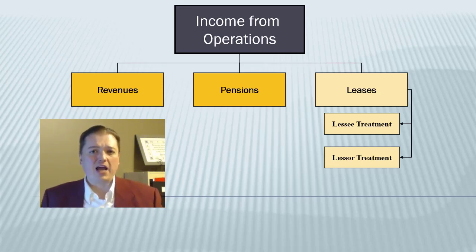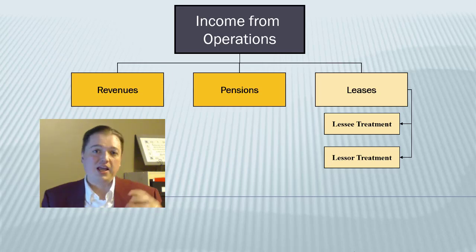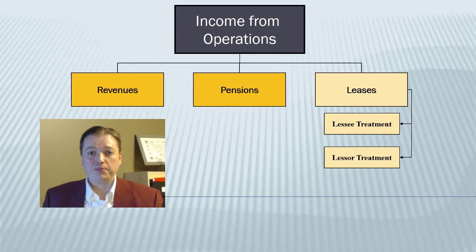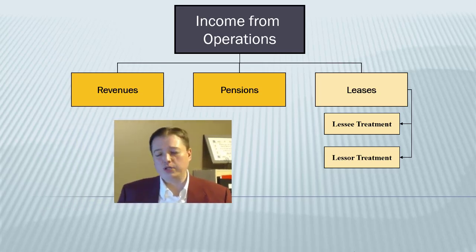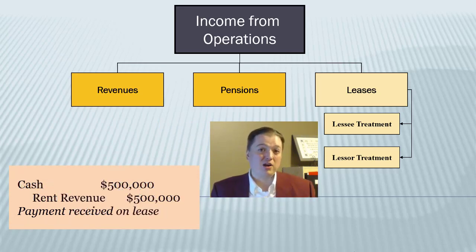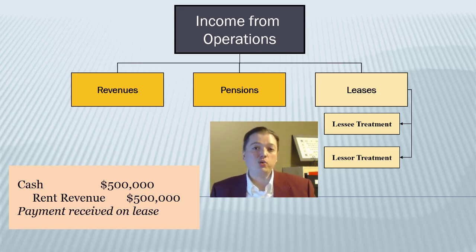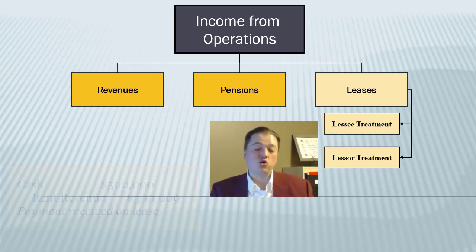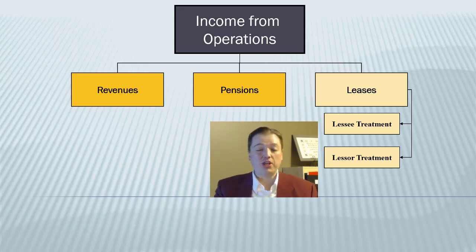For a long time FASB had a really complex set of rules for leases. It broke it down into two different types: operating and capital leases. Most companies preferred to use the operating style because the journal entries were really simple — you would debit rent expense, credit cash. Or if you were the lessor, you'd debit cash and credit rent. Under the capital lease structure, we treated it like a sale, so the lessor would actually transfer the asset off of their books.